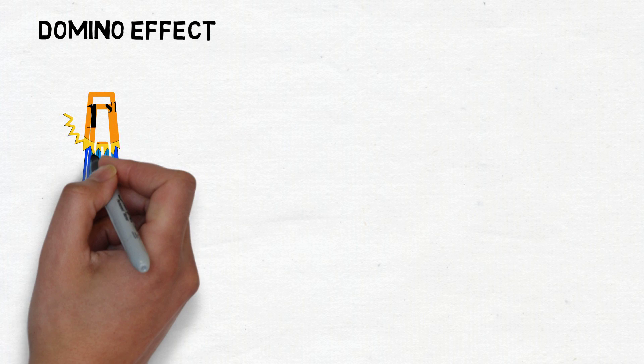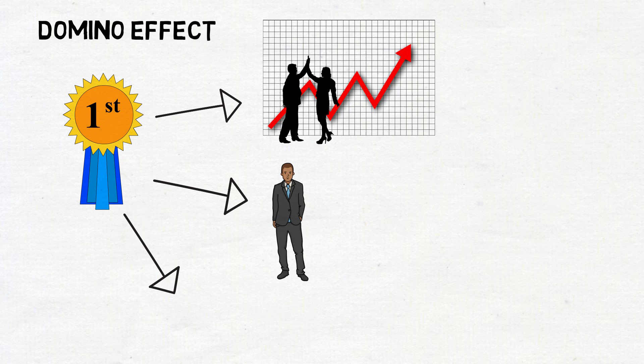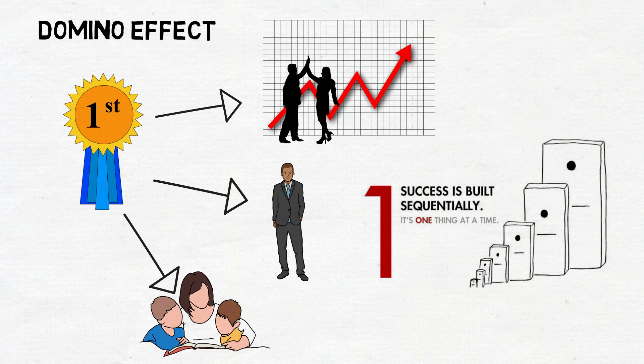This is what is referred to as the domino effect. The key to success is figuring out your one most important thing in your business, career, or your life and putting it into action. Identify and line up the dominoes and figure out which is the first domino you need to knock down to set the rest of them in motion.